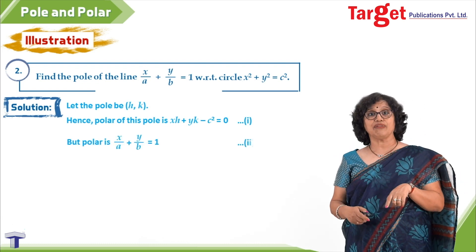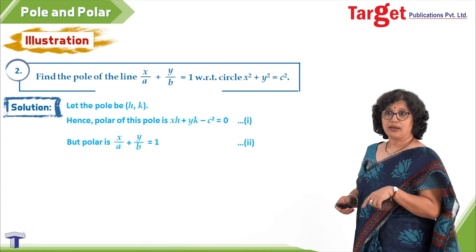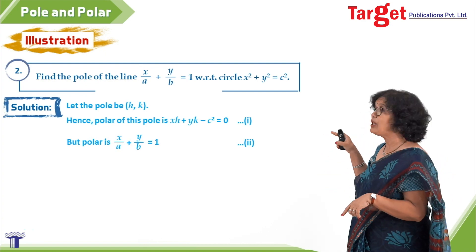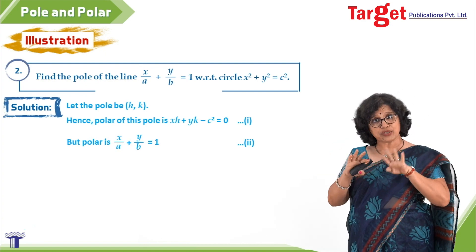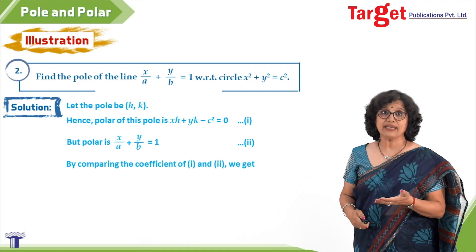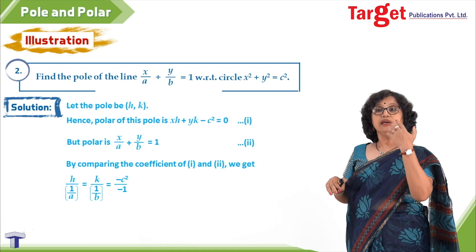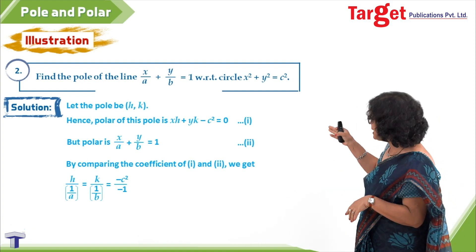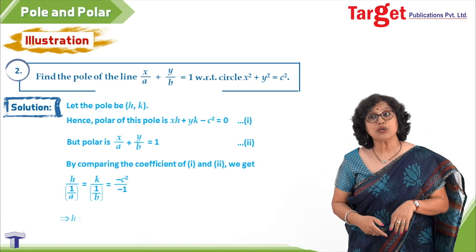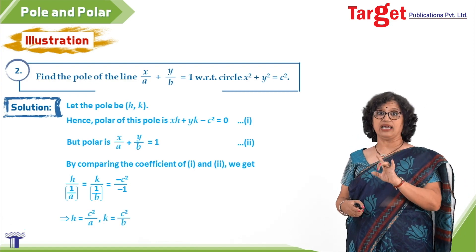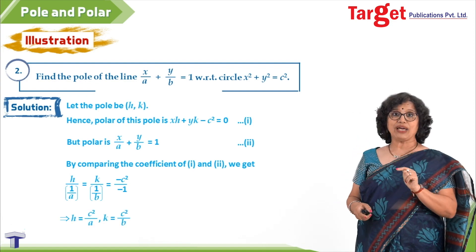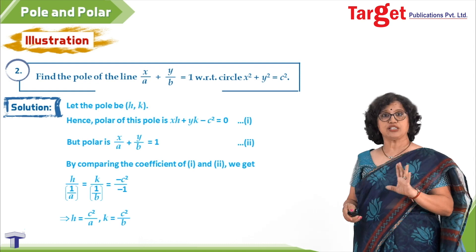Because the polar is given as x/a + y/b = 1, and both stand for the same thing. Can't we compare them? By comparing, what we get is h/(1/a) = k/(1/b) = -c²/(-1), which on simplification will give you h and k. h turns out to be c²/a and k turns out to be c²/b.